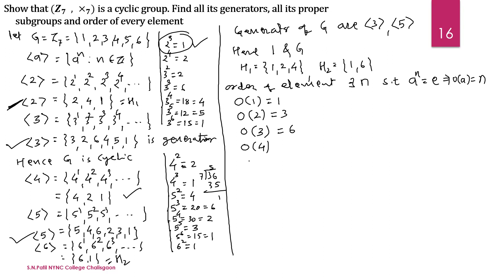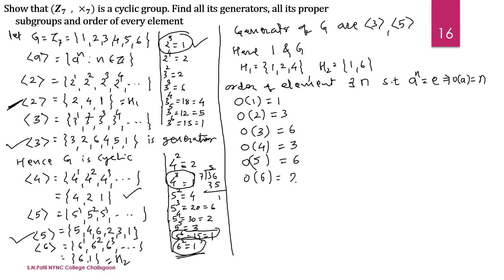Order of 4: 4^1 = 4; 4^2 = 16 mod 7 = 2; 4^3 = 8 mod 7 = 1. So the order of 4 is 3. Order of 5: 5 is a generator, therefore its order is 6. Order of 6: 6^1 = 6; 6^2 = 36 mod 7 = 1. By definition, the order of 6 is 2.